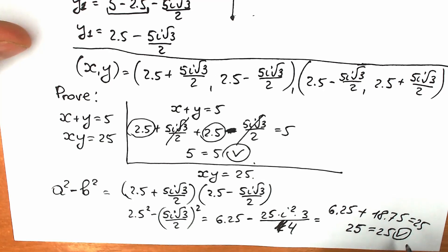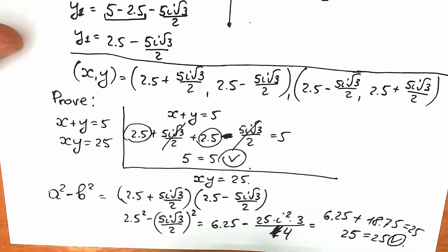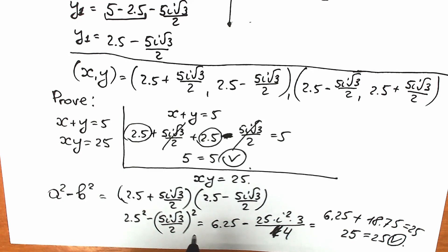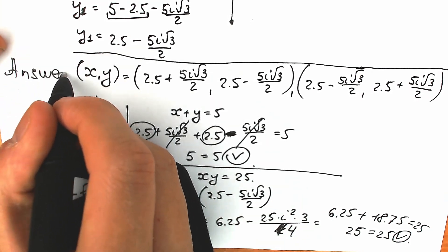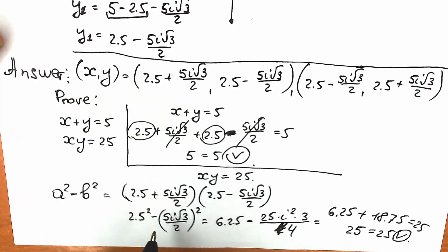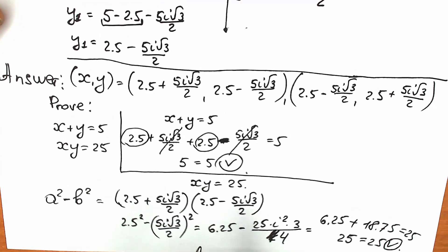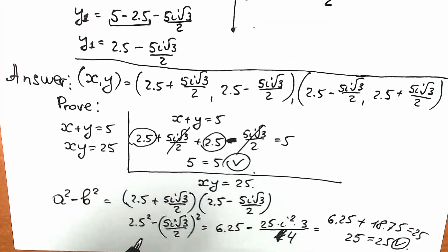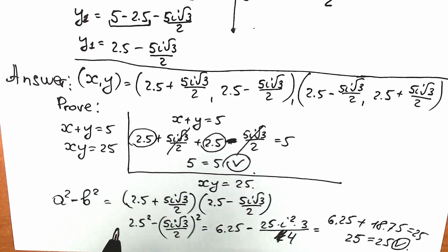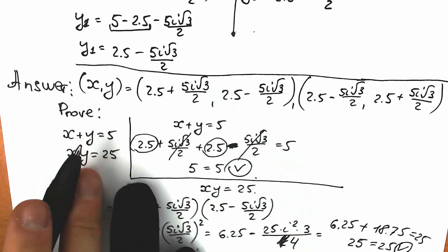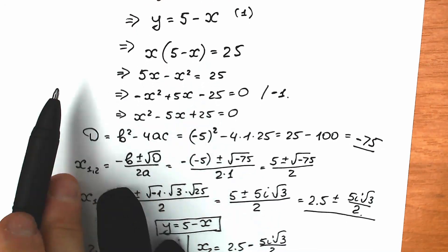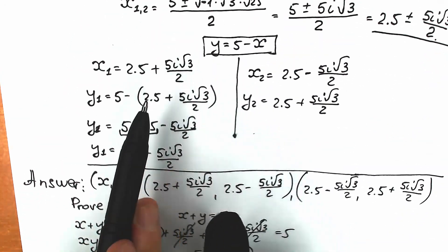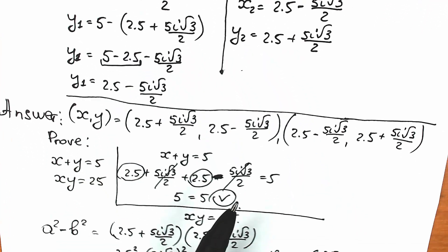So our solution is absolutely correct. As you can see, this is a complex solution but absolutely correct. These are our two pairs of solution, both absolutely correct — addition works perfectly and multiplication works perfectly. If you have your own solution, write it down in the comment section. There are a lot of faster methods, but this is the basic school method: express y through x, plug in to the second equation, find one or two roots, and group y first with x first, and y second with x second.